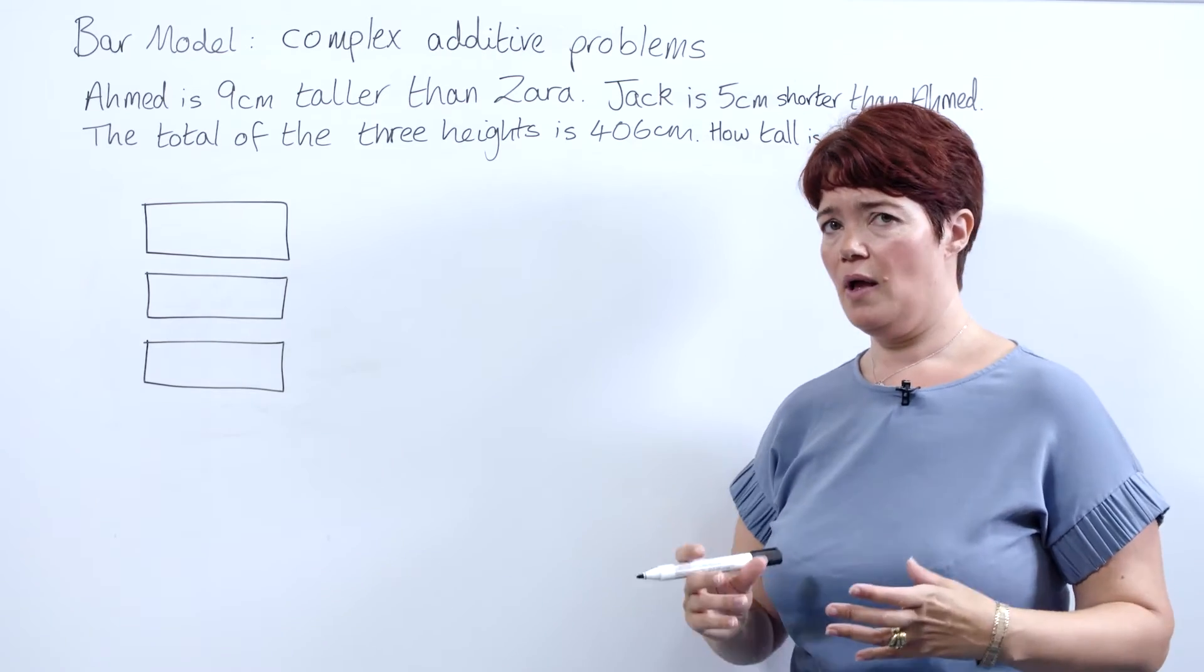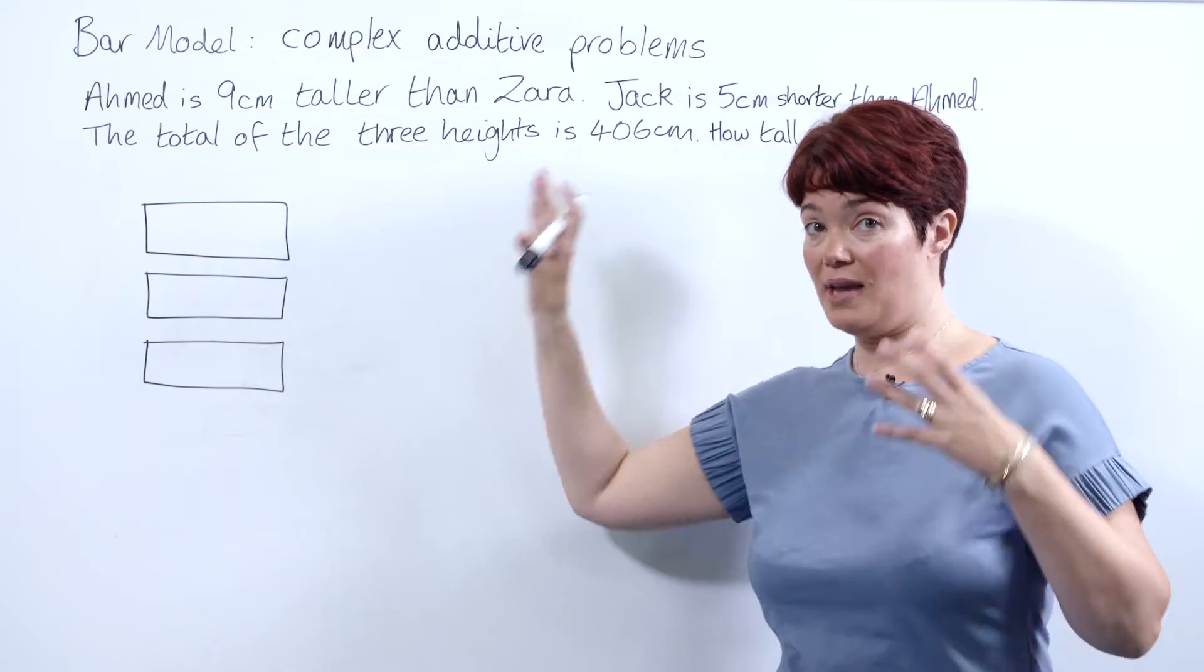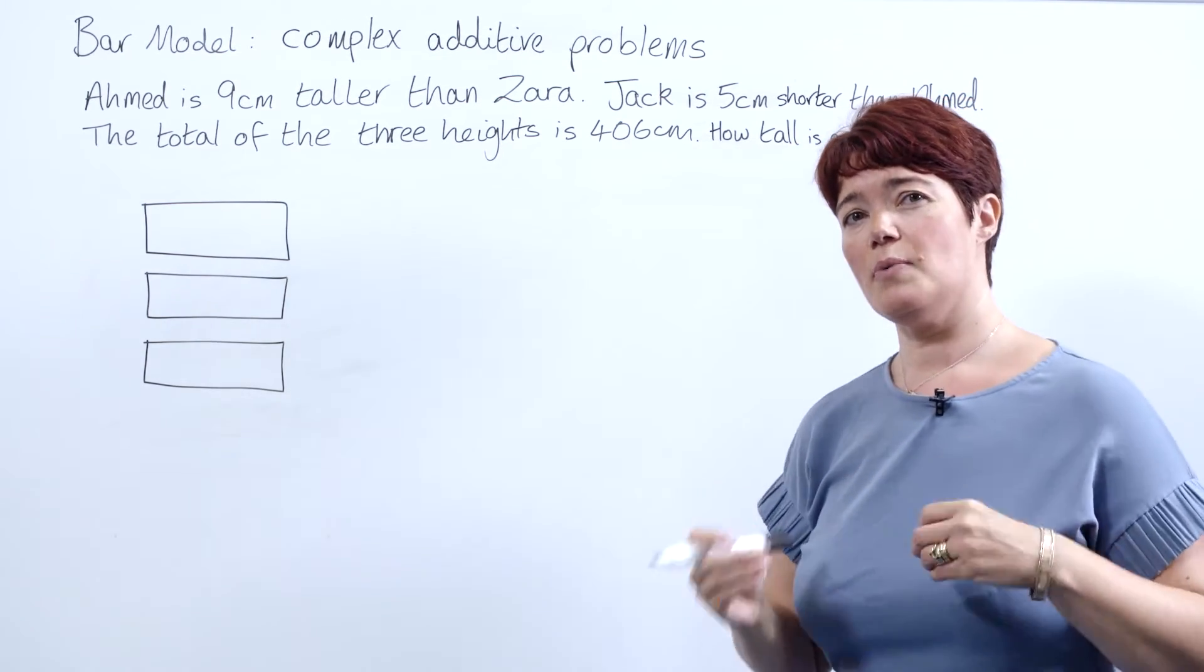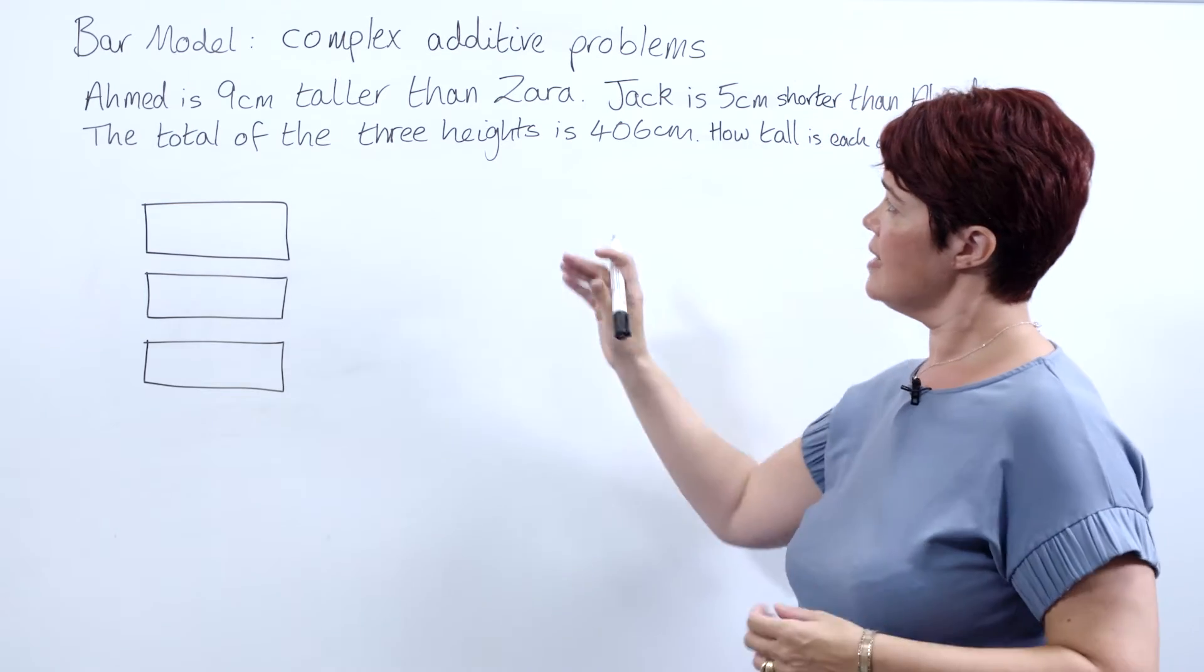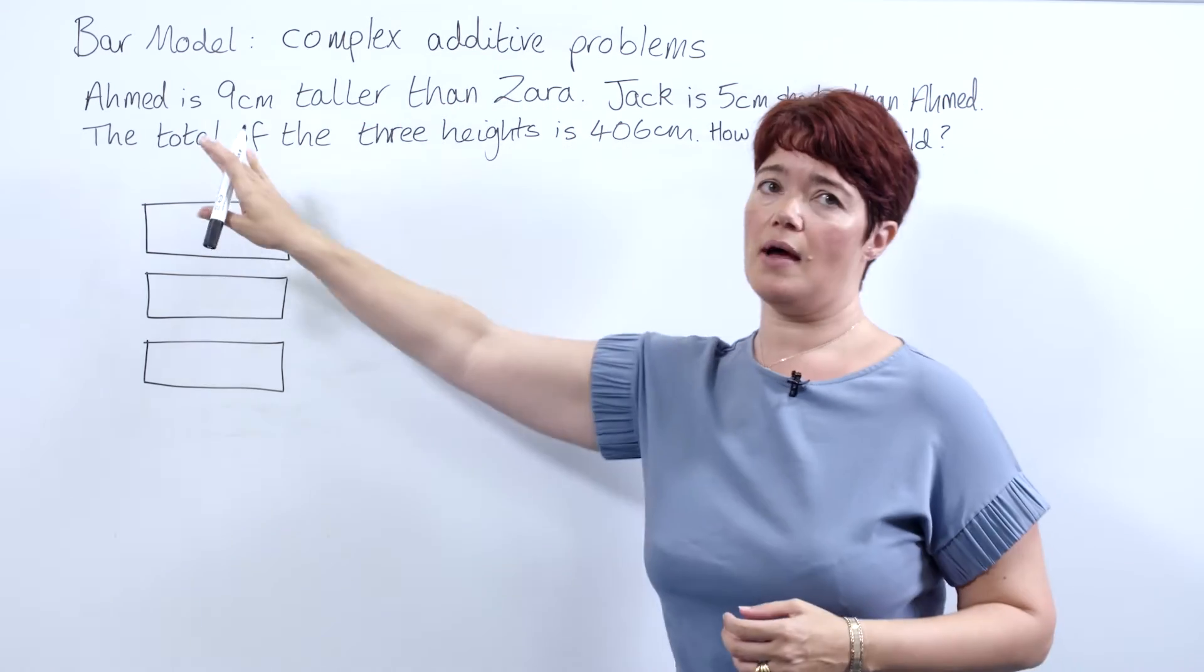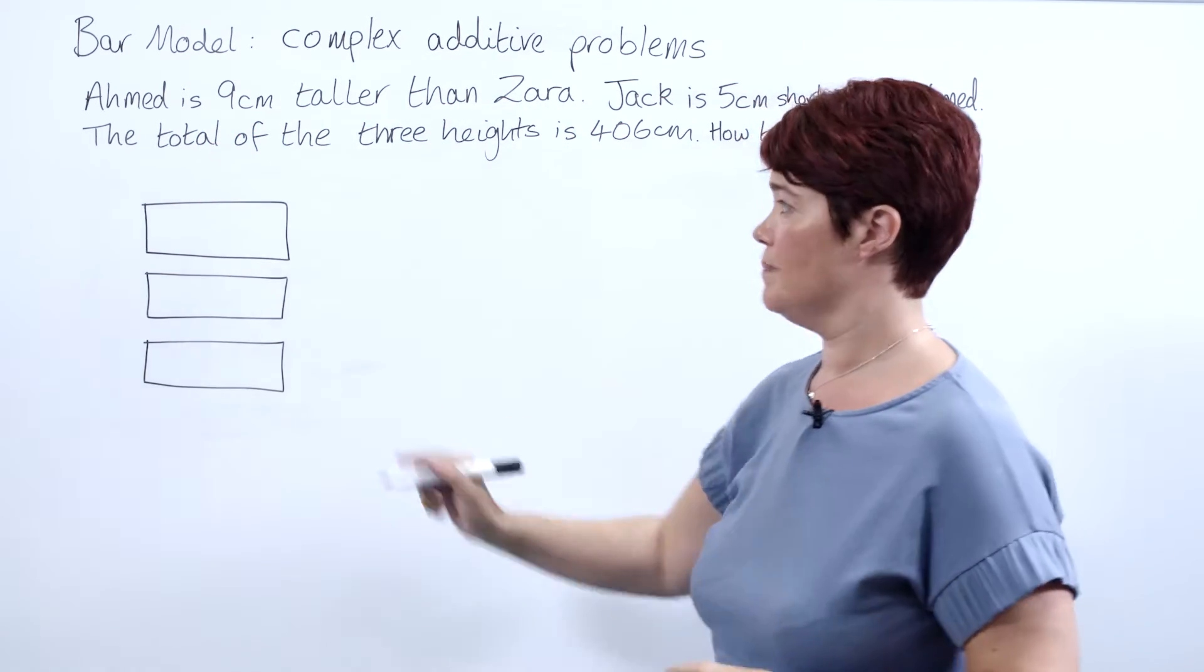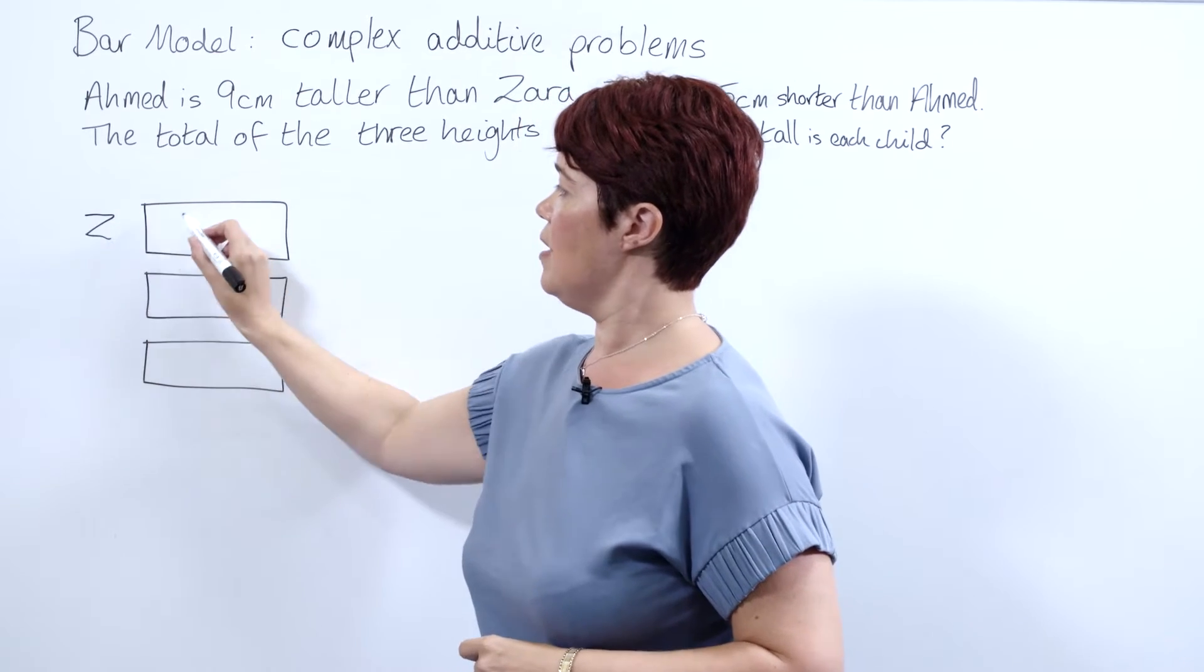We're going to use our bar model. We're going to have three bars because we have three children. We have to decide who is our base height. Now we can see if we have Zara, we can work out Ahmed, so Zara is going to be our base. Zara is our first bar and she is an unknown number of centimeters tall.